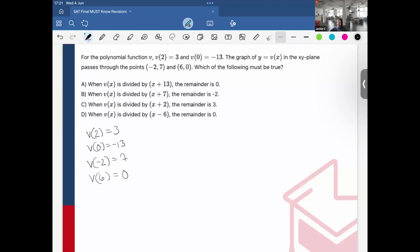Okay, so basically, what I'm going to do, and what I explained previously about the remainder theorem, is that I want to plug in to the function. So what this is saying, like when, for example, option A, when v(x) is divided by x plus 13, the remainder is 0.